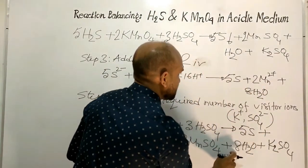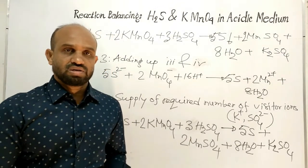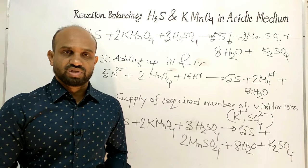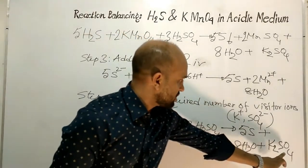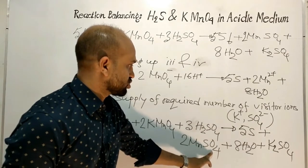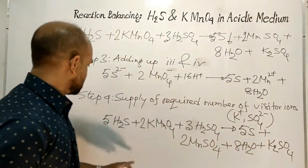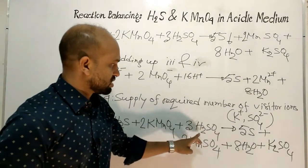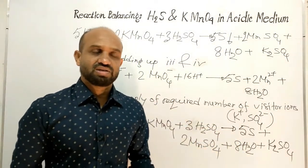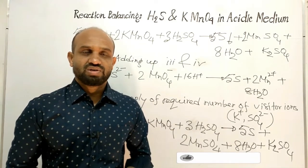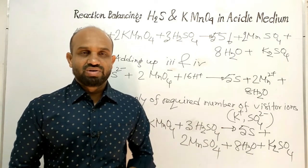The reaction is now completely balanced by the redox reaction method, or ion-electron method. Verification: there are three sulfate radicals on each side, five sulfur atoms on each side, and sixteen hydrogen atoms on each side. The reaction is completely balanced. This is all about reaction balancing by the redox reaction method. Thank you very much.